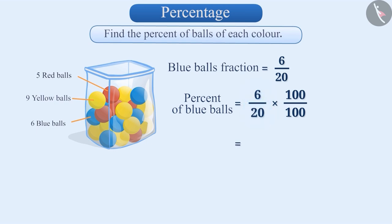Now, we can write it as 6 into 100 by 20 into 1 by 100. 1 by 100 means a percent which we will represent by this symbol. On solving it, we will find that the blue balls are 30% of the total balls.